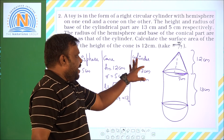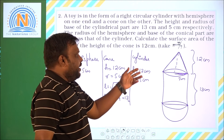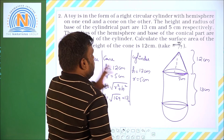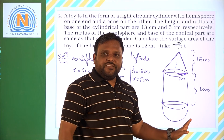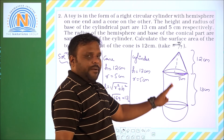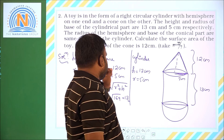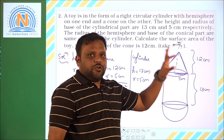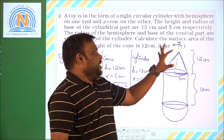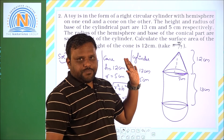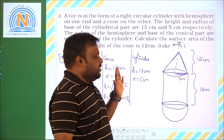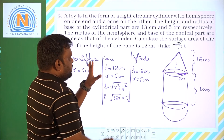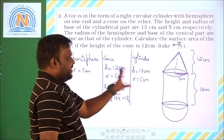To calculate the complete surface area of the toy, we have three parts: cone, hemisphere, and cylinder. I will find the CSA of each one individually and then add them. CSA of hemisphere is 2πR², CSA of cylinder is 2πRH, and CSA of cone is πRL.